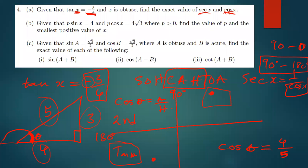We start with cos because sec x equals 1 over cos x. Using SOHCAHTOA, cos theta equals adjacent over hypotenuse, which is 4 over 5. But since the angle is in the second quadrant, where cosine is negative, cos x equals negative 4 over 5.